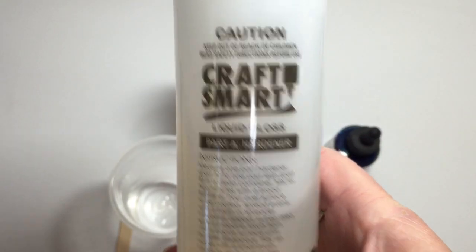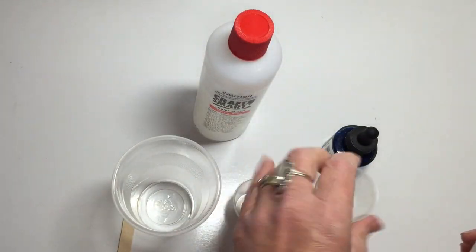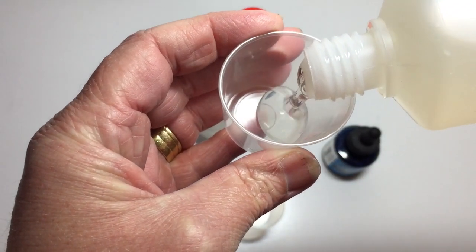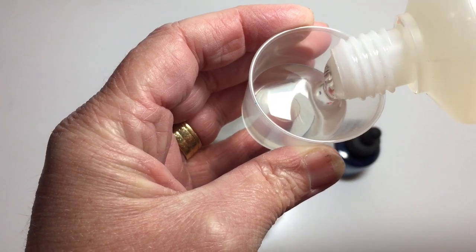The first thing we do is to mix up the hardener. I'm going to pour it all the way to the top and then pour it into a disposable cup.